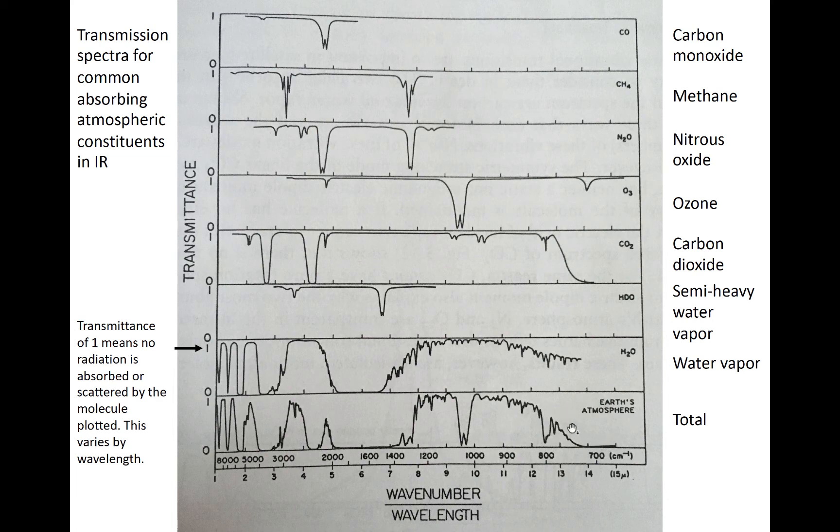The effects of well-mixed molecules like carbon dioxide will be similar around the world. However, the effects of other molecules like water vapor are heavily dependent upon how much of that molecule is actually present. If no water vapor is present, then it will not affect the transmittance of the atmosphere at that location.